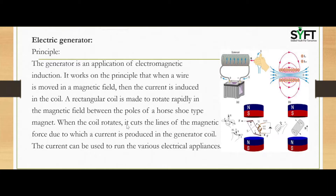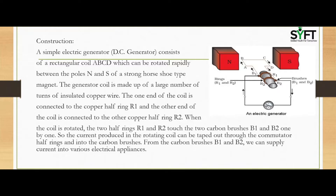A rectangular coil is made to rotate rapidly in the magnetic field between the poles of a horseshoe-type magnet. When the coil rotates, it cuts the lines of magnetic force, due to which a current is produced in the generator coil. This current can be used to run various electrical appliances.